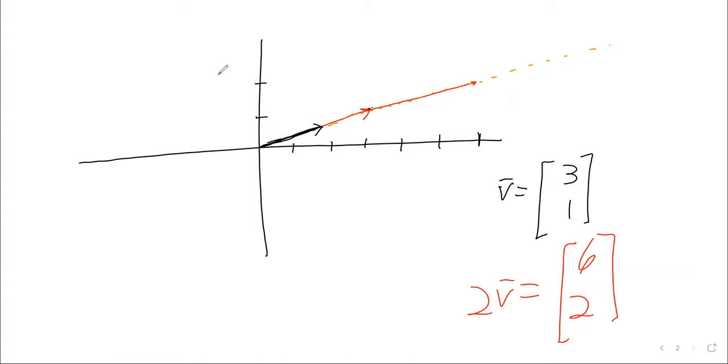The only sort of exception to this happens when you have negative scalars. So like if you have a negative two instead of a positive two, a negative scalar perfectly reverses the direction. So negative two v might look something like that. It's doing the scale thing first of all, so it becomes twice as long, but then we turn around and go in the opposite direction of the original vector.